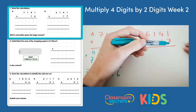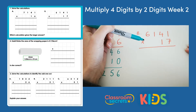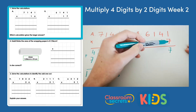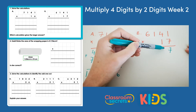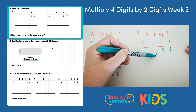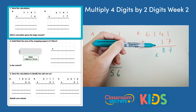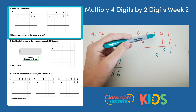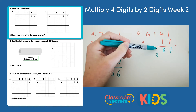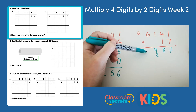Let's solve B then. Step 1: multiply the ones. So we do 7 times 1 which is 7. 7 times 4 which is 28, so we put the 8 in the tens column and we exchange the 2 into the hundreds column. We do 7 and 1 again which is 7, add the 2 makes 9. And then 7 and 6 makes 42.